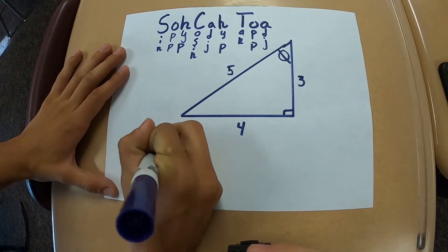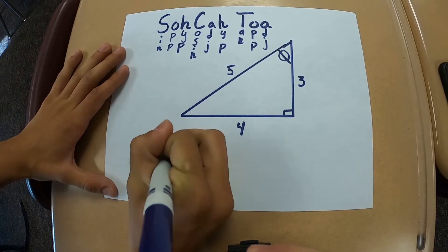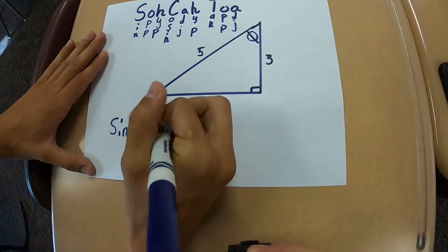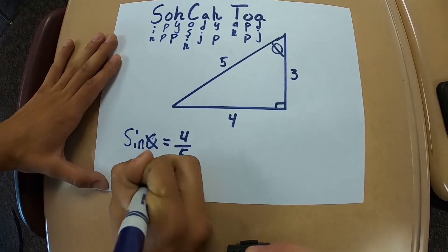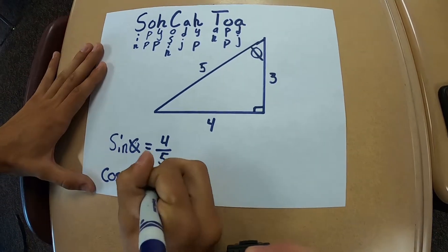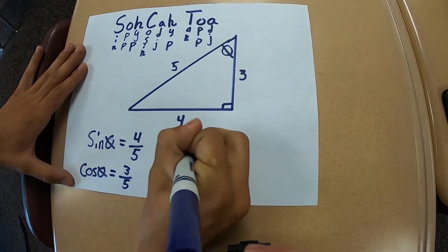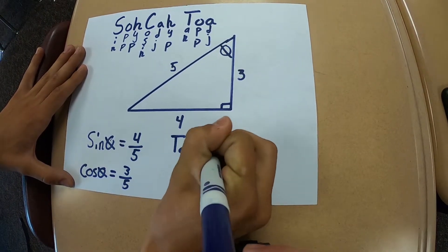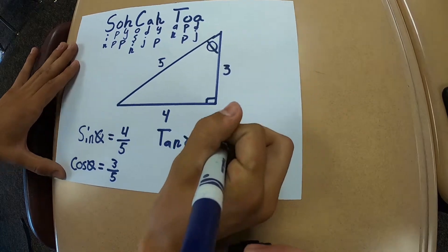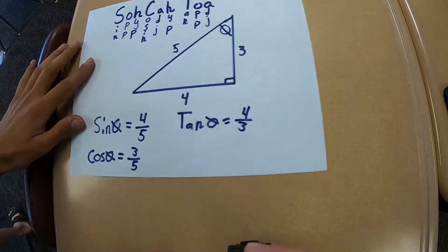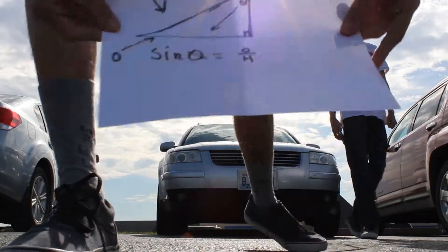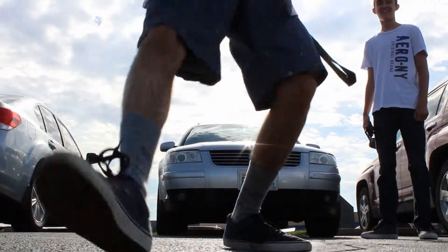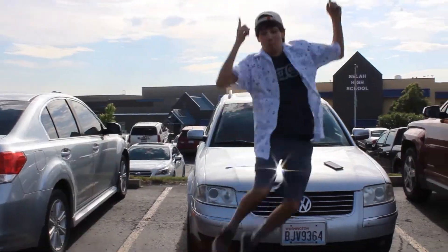I'm gonna use SOH-CAH-TOA to solve for theta, I'm gonna solve till I can't no more. I'm gonna use SOH-CAH-TOA to solve for theta, I'm gonna solve till I can't no more. Sine is opposite over hypotenuse — you do it like this.